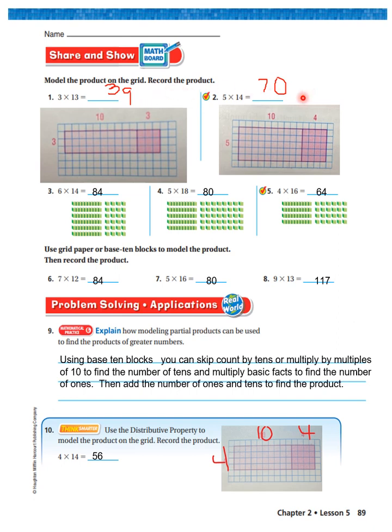Now if you didn't get 39 or 70, you need to go back and figure out what you did. Remember, it would be 5 times 10 and then 5 times 4. 5 times 10 is 50, 5 times 4 is 20. 50 and 20 is 70. So 6 times 14 is 84, 5 times 18 is 80, 4 times 16 is 64. The answer to 6 is 84, 7 is 80, and 8 is 117.